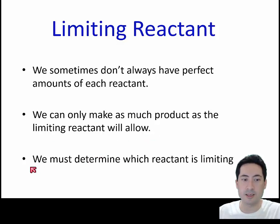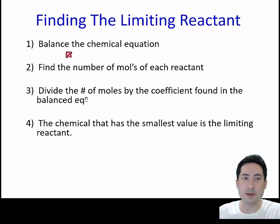You're only going to get as much product as the first thing that's going to run out. The first thing you need to do to find it is the stoichiometry of it. You're going to look at the moles of both reactants and work out which reactant is going to run out first.